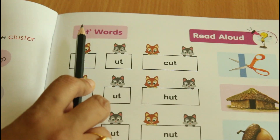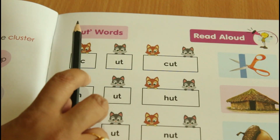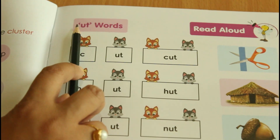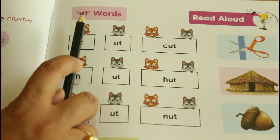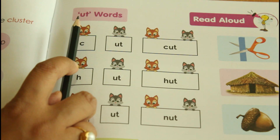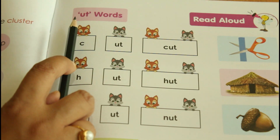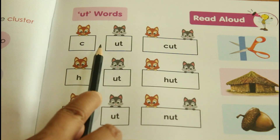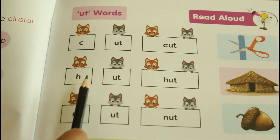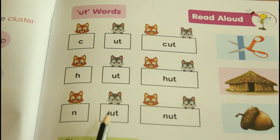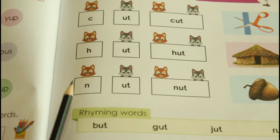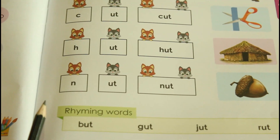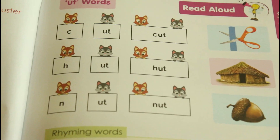Children, remember — you can join any consonant with the cluster word and make a new word. C is a consonant, so C-ut: cut. H-ut: hut. N-ut: nut. Same way, you can add any other consonant and try to make a new word.